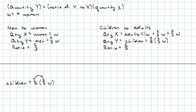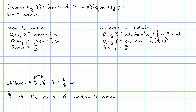Simplifying by doing this multiplication, we get the number of children is two-thirds the number of women. That's our expression. Comparing that expression to our ratio equation, we see that two-thirds must be the ratio of children to women. So the ratio of children to women is 2 to 3.